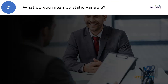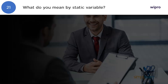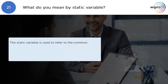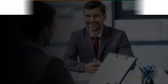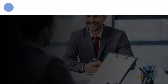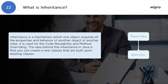What do you mean by a static variable? A static variable is used to refer to the common property of all objects, like the name of the company, college name, or students. A static variable gets memory only once in the class area at the time of class loading.